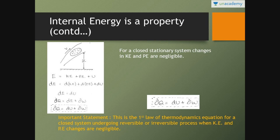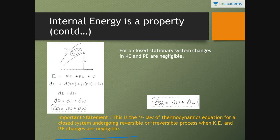Regarding internal energy: energy has three components — kinetic energy, potential energy, and internal energy. For a closed stationary system, changes in kinetic and potential energy are zero, so we can write dE equals dU. Therefore, DQ equals dU plus DW. This is the final first law equation for a closed stationary system, valid for reversible as well as irreversible processes. This is the basic equation you will use in solving numerical problems.